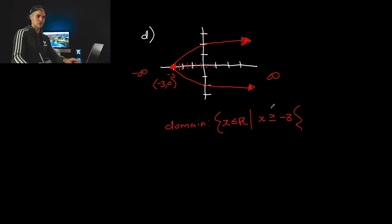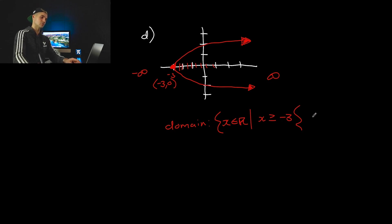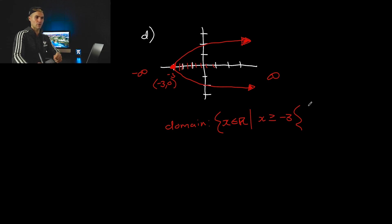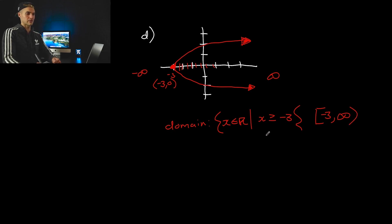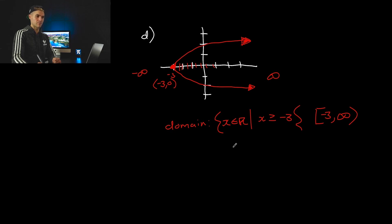In interval notation for the domain, the leftmost point is -3 (included), and there's no limit on the right side, so it's [-3, +∞). Two different ways to state the domain of this sideways parabola.